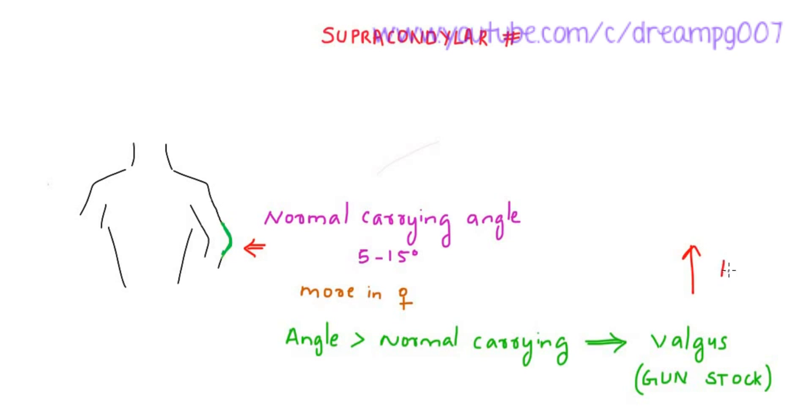Long-standing cases of this gunstock deformity can lead to tardy ulnar nerve palsy. Tardy ulnar nerve palsy can be treated by transposing the ulnar nerve to the front of the elbow. Gunstock deformity can be treated by doing a wedge osteotomy.